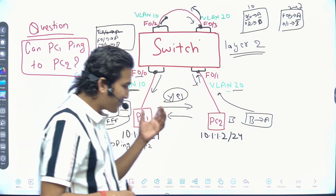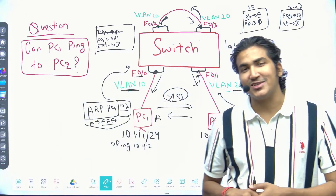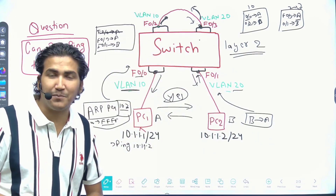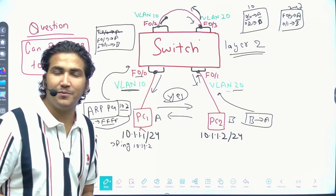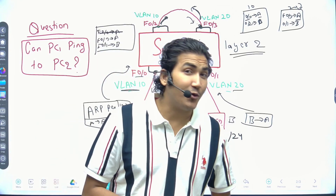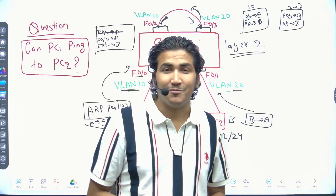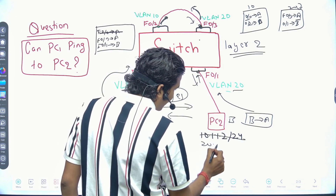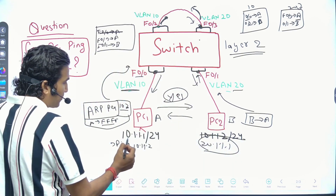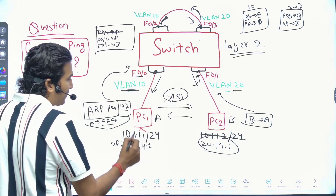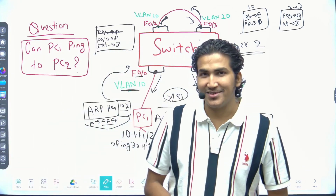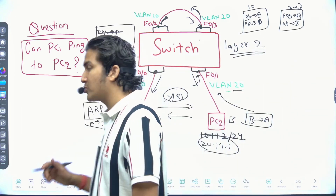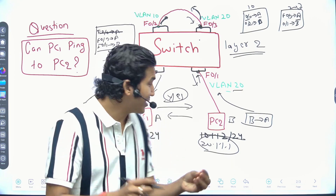Interviewers ask these types of questions to check your knowledge. We would not use this technique in real time, but this is how communication can be made possible between two VLANs — provided both PCs are on the same subnet. If the IP were on a different subnet, say 20.1.1.1, then a gateway would be required. Without a gateway, PC would drop the traffic.